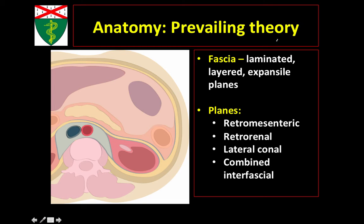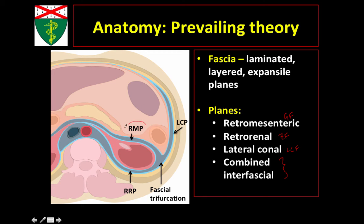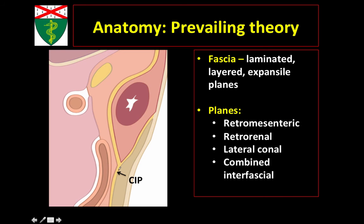As a result, we've added a few planes to our vocabulary. The retromesenteric plane develops due to the different fascial layers of Gerota's fascia. The retrorenal plane forms amidst the different layers of Zuckerkandl's fascia. The lateral conal plane forms within the lateral conal fascia. As these planes meet out laterally, it is known as the fascial trifurcation, and as they extend inferiorly, they form the combined interfascial plane.